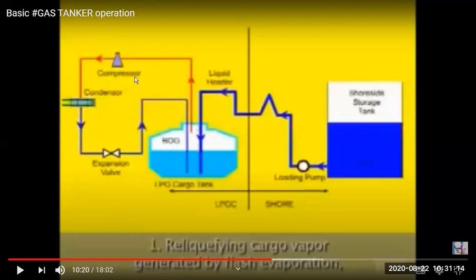Some gases don't get liquefied in only one compression cycle. So we have single stage, double stage, or triple stage compressors. We compress two or three times — for example, the first stage compresses to 2 bar, the next to 4 bar, and the third to 8 bar. Different stage compressors are used depending on the cargo requirements and pressure and temperature. For LNG at minus 42°C, we may need a three-stage compressor because we need to cool the gas to very low temperatures.